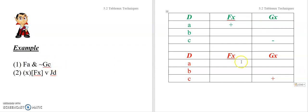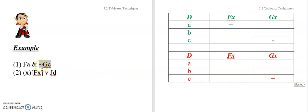Now let's look at the case that makes the same sentence false. There are several different options, but again it's a conjunction, so we need at least one of the conjuncts to be false. What I did was make the right conjunct false. In order to be true, C has to lack the property G, but I've got C having the property G. The right conjunct is false, and therefore the entire conjunction is false. Fill in the others any old way you want and it will be an interpretation according to which the sentence is false.